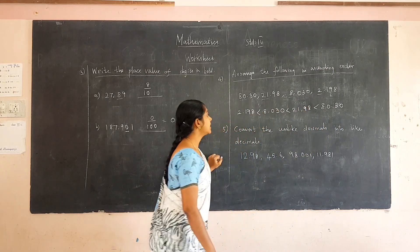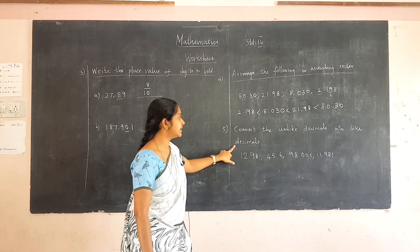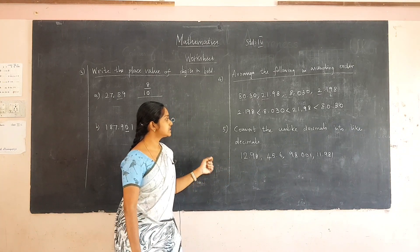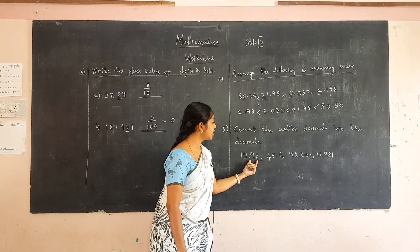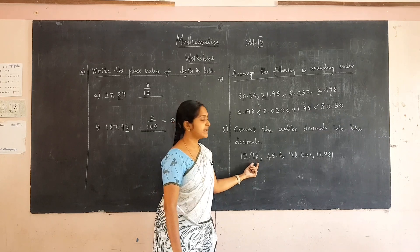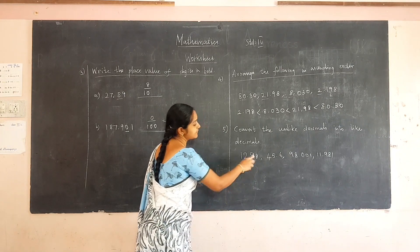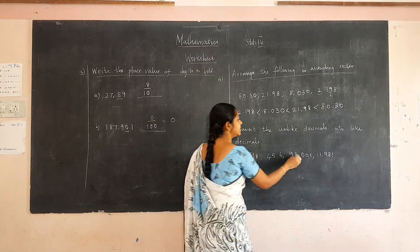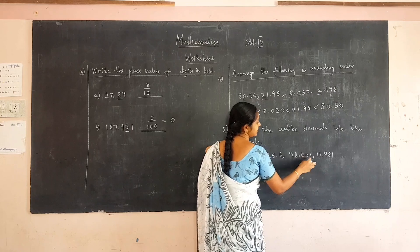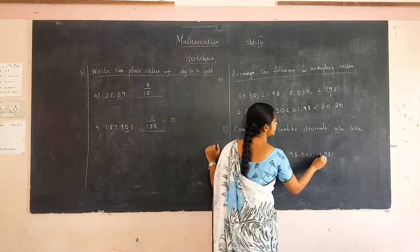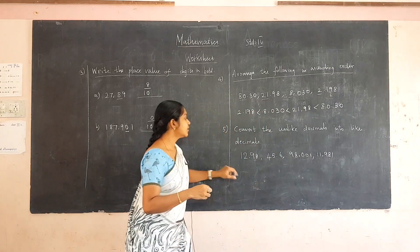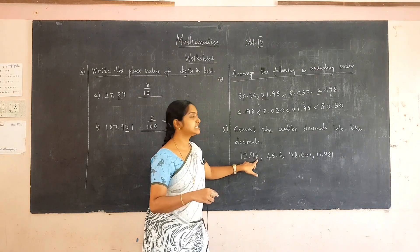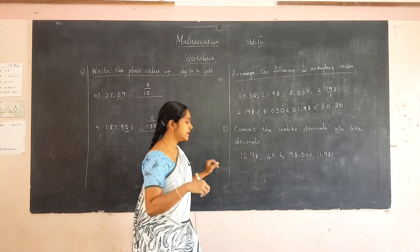Next, convert the unlike decimals into like decimals. Like decimals means after the decimal point we must have the same number of place values. Here we have 2 place values, here 1 place value, here 3 place values, and here 3 place values. So we are going to make all decimal numbers have three decimal places.